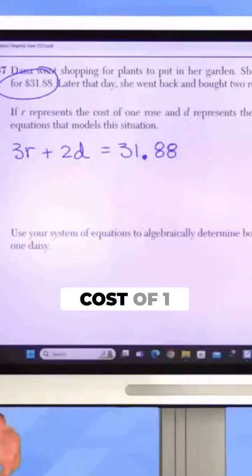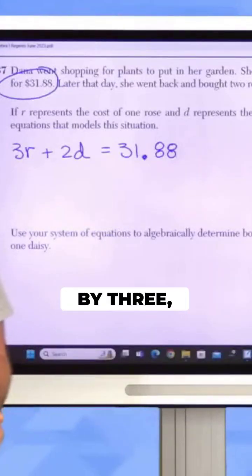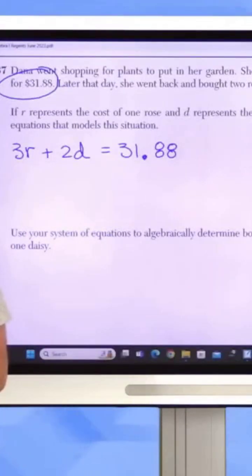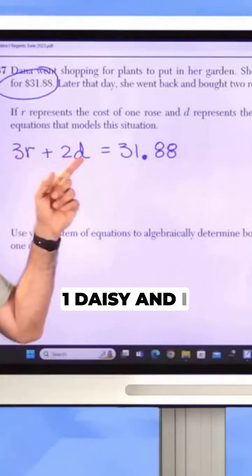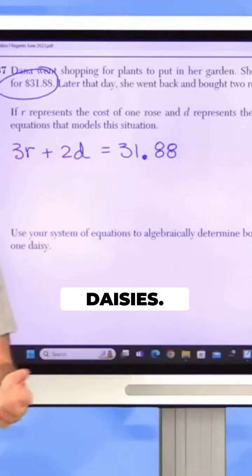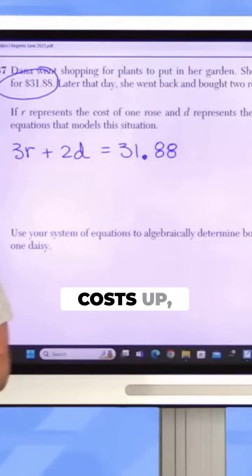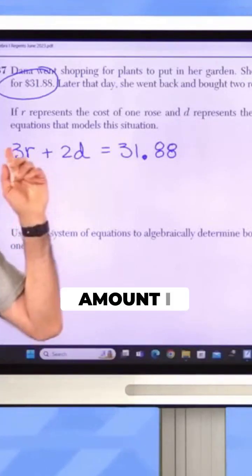If I take the cost of one rose and multiply it by three, I get the cost of three roses. And if I take the cost of one daisy and multiply it by two, I get the cost of two daisies. And then when I add those two costs up, I get the total amount I spent.